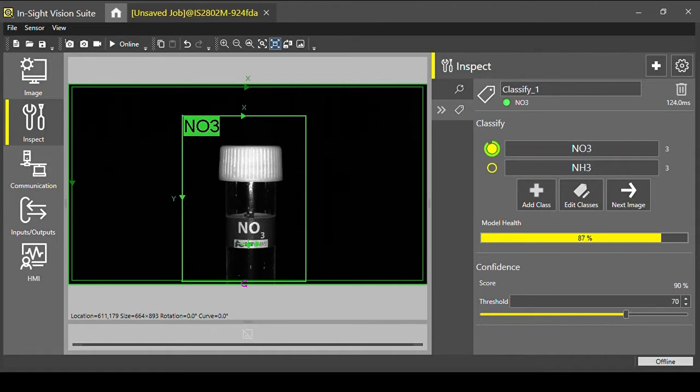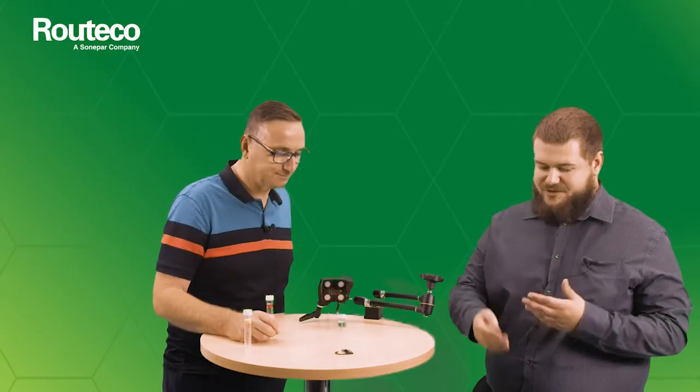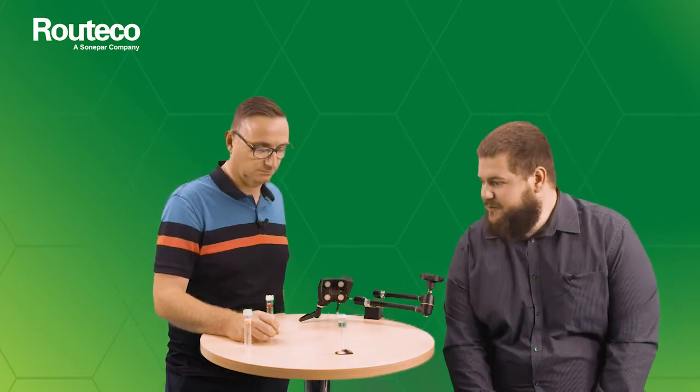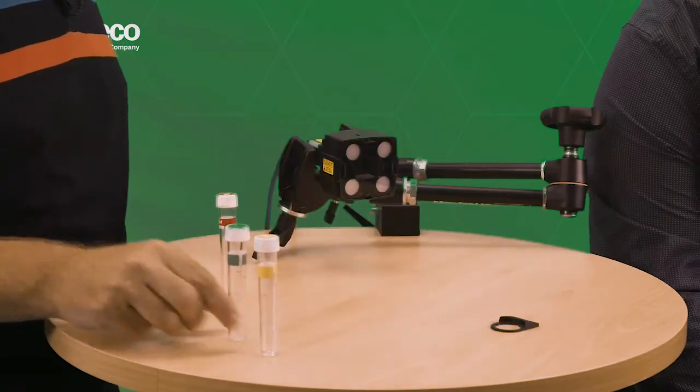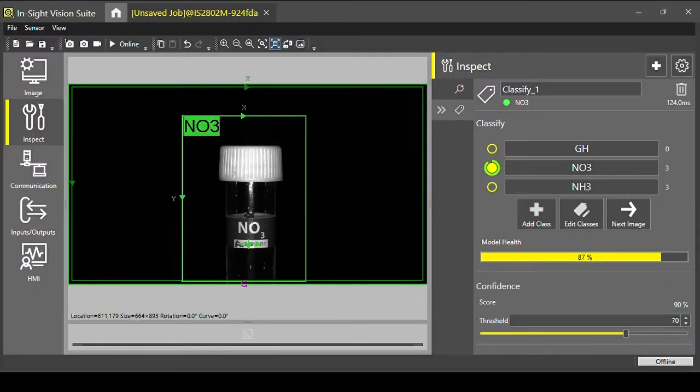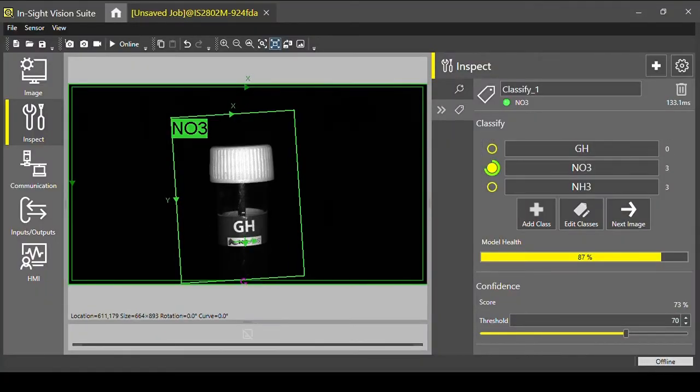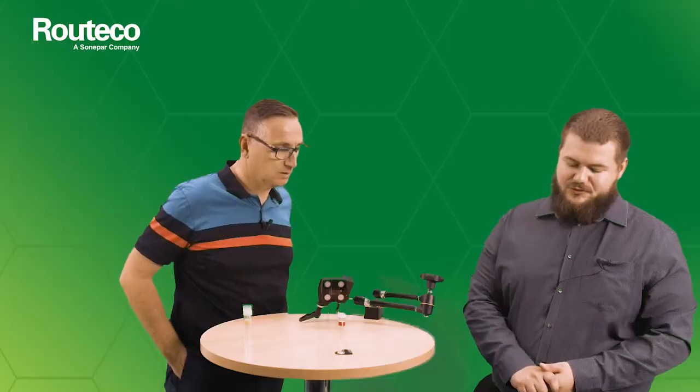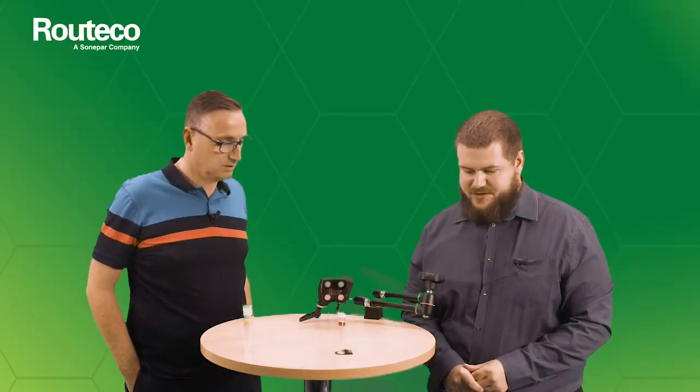And you might be able to see on the software there's a model health, which as we're going through and the system is building up that network, the model health is increasing. So we're up to 87%. We've got one more class to add, which will be the red GH tube. Let's take that one out. You could have got a smaller test tube on a flat table. So take an image. Label that as GH. And then if we take a couple more. And we can see that model health is now jumping up now at 95%. And we just take one more image just for a nice round three.